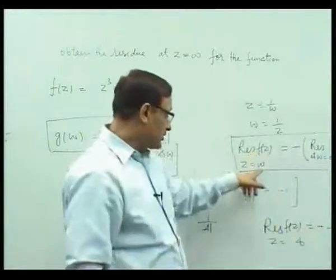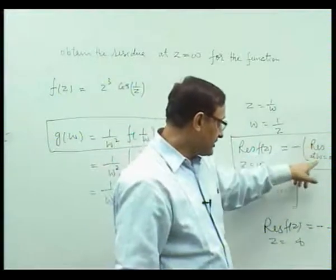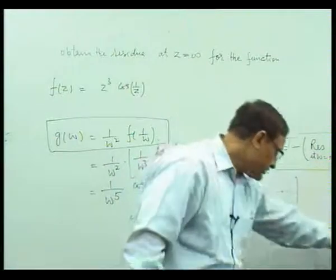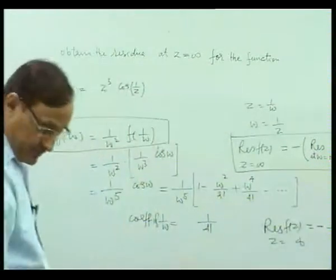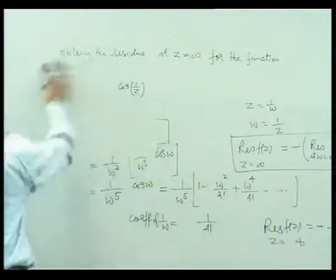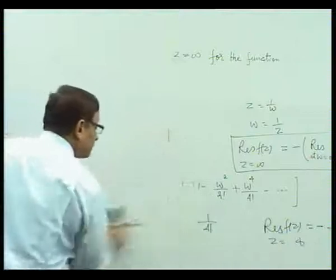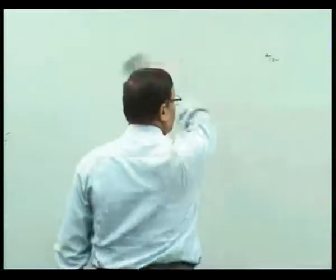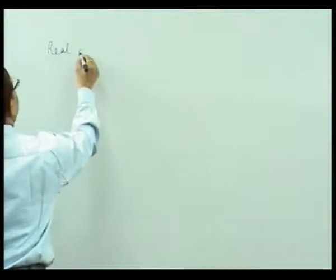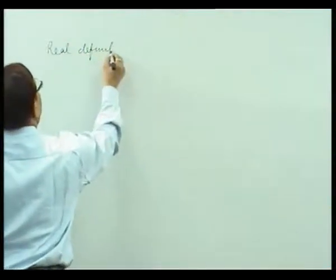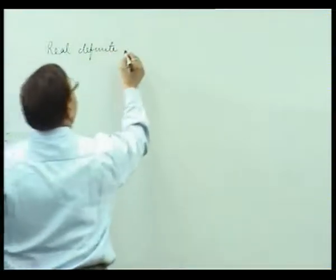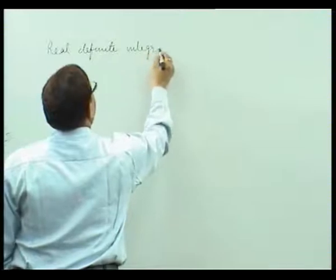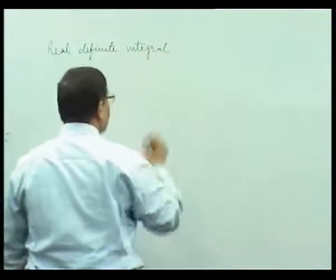To summarize: residue of f(z) at z = ∞ is the negative of the residue of g(w) at w = 0, and this gives −1/24. Now one application of the residue theorem is to find real definite integrals involving trigonometric functions.